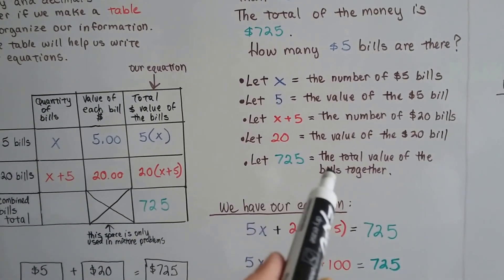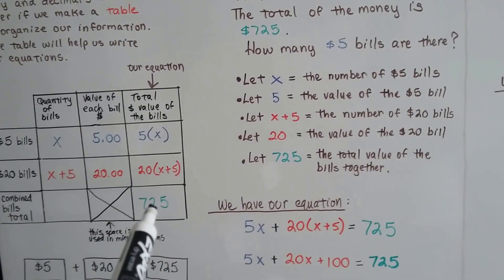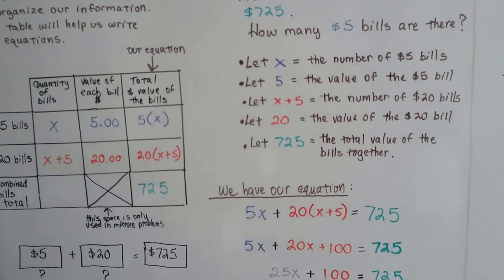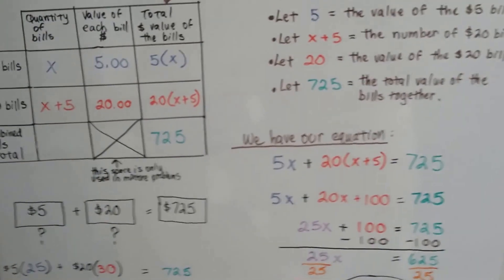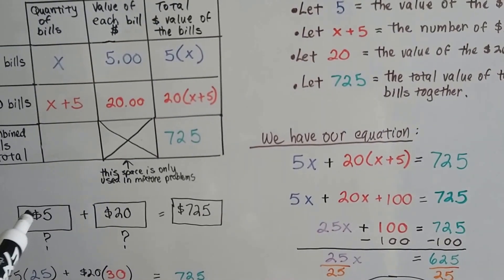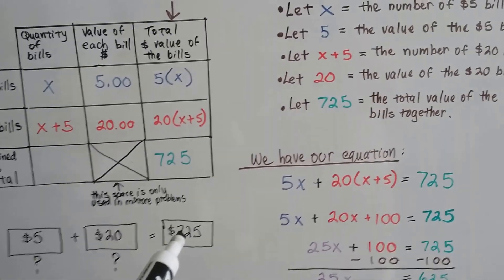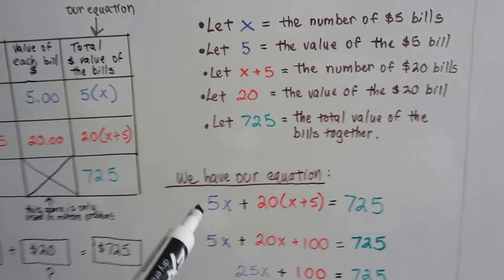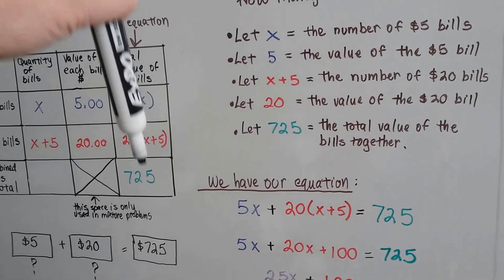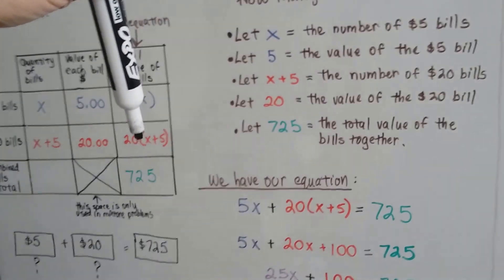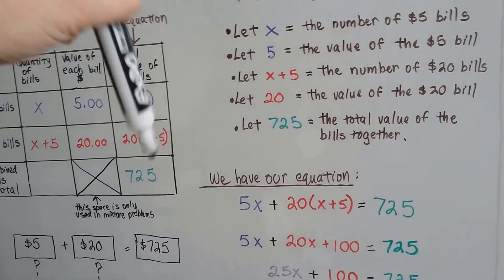The $725 is the total value and that is the blue one and the red one is going to equal this green one. We have our equation. We have to figure out how many $5 bills plus how many $20 bills are going to make $725. Our equation comes straight down this column. We've got 5X plus 20 times X plus 5 equals 725.